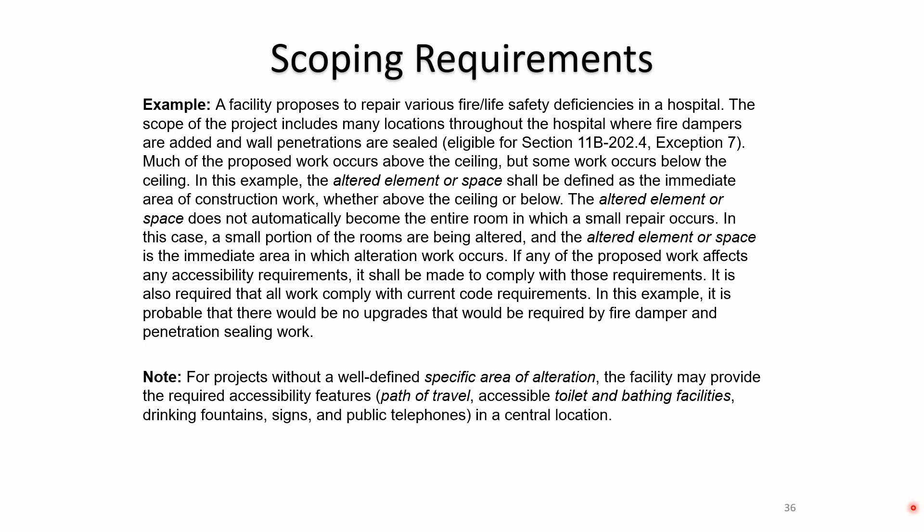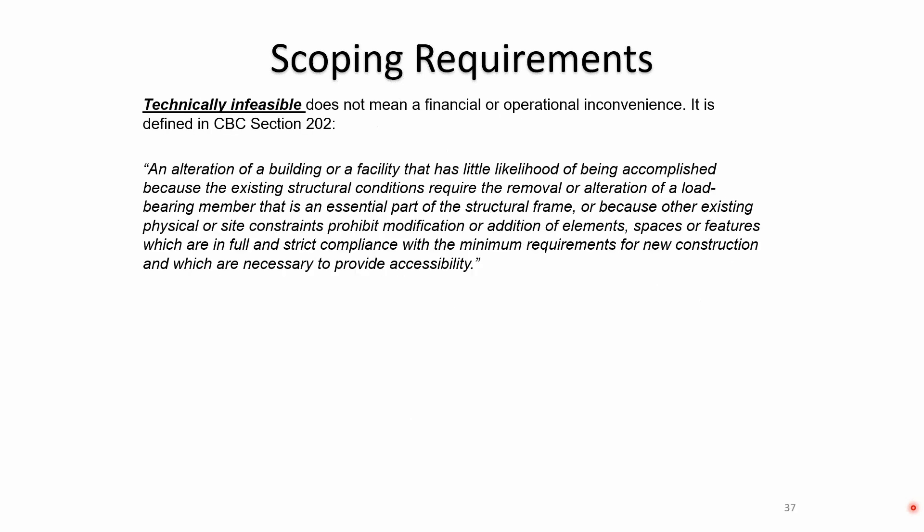For projects without a well-defined specific area of alteration, the facility may provide the required accessibility features — path of travel, accessible toilet and bathing facilities, drinking fountain, signs, and telephone — in a central location. If work is spread all over the place and you have to do path of travel, you can do it in one major location such as a public toilet.